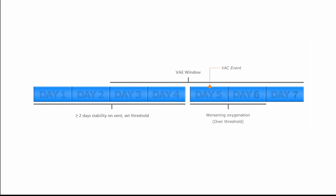In this example, the patient was on a ventilator for four days with at least two days of stability. Then from day four to day five, the patient had worsening oxygenation — defined as a PEEP that went up by three centimeters of water during one calendar day and stayed there for two calendar days, or an FiO2 that went up by 20 points in one calendar day and stayed there for two calendar days. Day five is when the VAC event occurred.